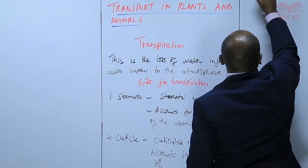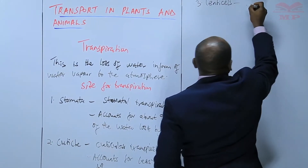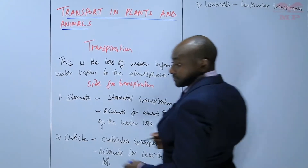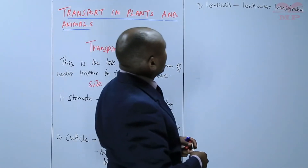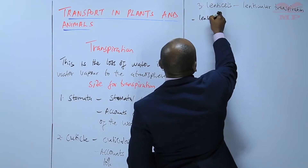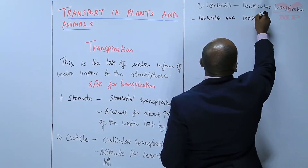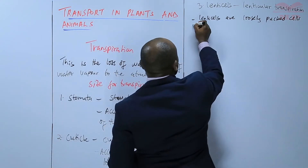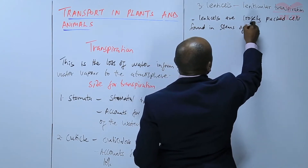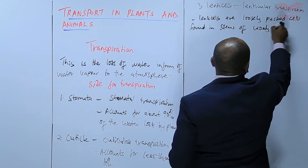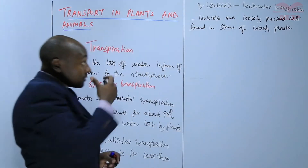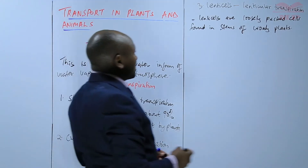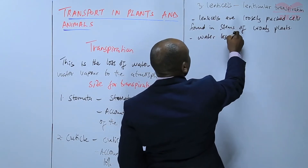Then we have transpiration through the lenticels, what we call lenticular transpiration. Lenticels are loosely packed cells found in stems — they leave a lot of spaces. So some woody plants have cells on their stem that are loosely packed, and through those cells water can be lost. However, the water loss here is very minimal.